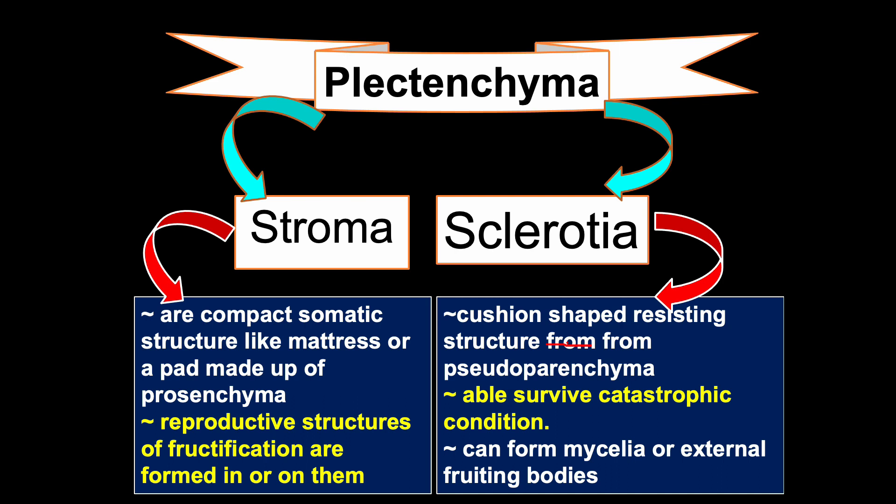Sclerotia germination may be mycelogenic, producing directly the mycelium. Examples include Sclerotium rolfsii, Rhizoctonia solani, and Sclerotium cepivorum that causes white rot of onion — these are known as mycelogenous sclerotia. Sclerotia may also be sporogenous, bearing masses of spores; the common example is Botrytis, which produces sporogenous sclerotia. They may also be carpogenous, producing spore-bearing structures.